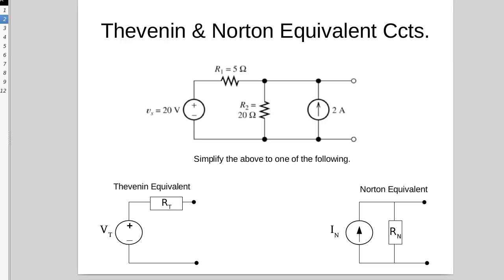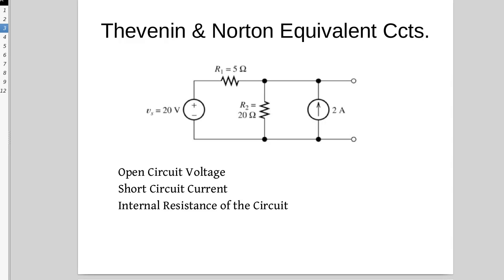So we want to convert this circuit into either the Thevenin equivalent or the Norton equivalent and to do that we need to find any two of these three items. As we've previously stated, once we've found two of them we can find the third.